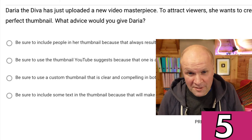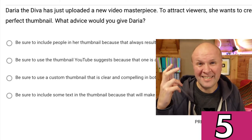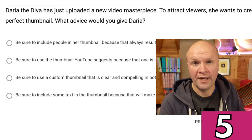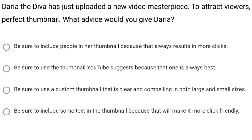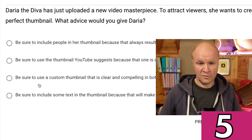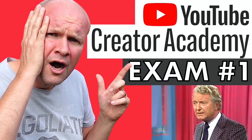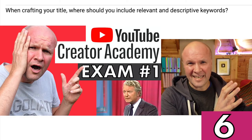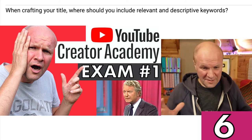Daria the diva has just uploaded a new video masterpiece. To attract viewers she wants to create the perfect thumbnail. What advice would you give to Daria? Be sure to include people in her thumbnail because that always results in more clicks. Use the thumbnail YouTube suggests because that one is always best. Use a custom thumbnail that is clear and compelling. Or include some text in the thumbnail because that will make it more click-friendly. I'm going for: use a custom thumbnail that's clear and compelling. By the way, I hate the thumbnails I'm making for these videos — if you've got any ideas, put them in the comments.